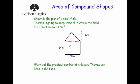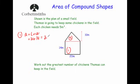For part 1, the rectangle: area equals length times width. The length is 20 and the width is 14, giving 20 times 14 equals 280 meters squared.